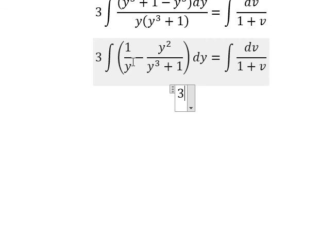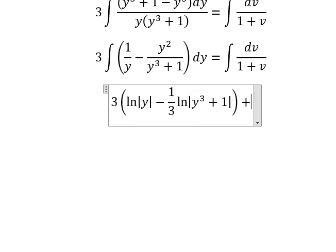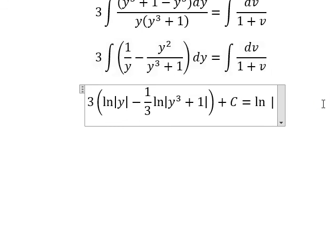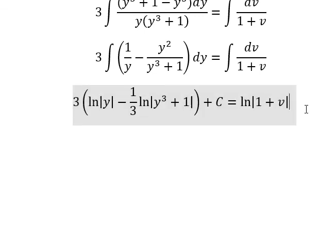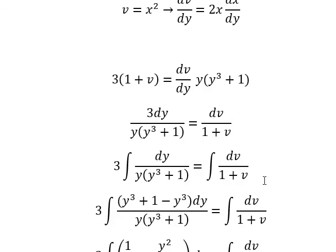Now we can get the final answer. The integration of 1 over y is ln of the absolute value of y. The integration of the second term is minus 1 third ln of y to the power of 3 plus 1, plus c. The integration of the right side is ln of the absolute value of 1 plus v, where v is x squared.